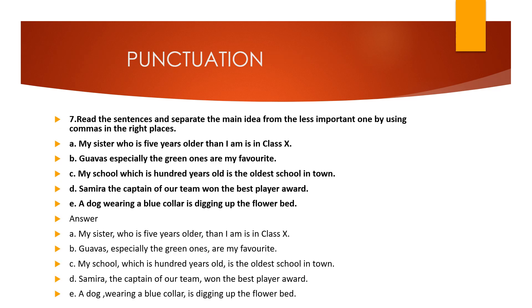Our last exercise topic is punctuation — use of commas. Commas are useful punctuation marks. We use them to separate a list of things. Example: 'I went to the market and bought a banana, a bag of rice, and some turmeric.' We also use commas to separate parts of a sentence so that it becomes easier to read. We use a pair of commas in the middle of a sentence to set off words that are not essential to the meaning.